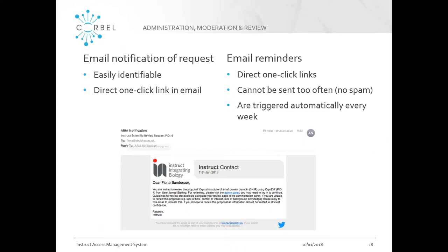Separate from the messaging system, we do email notifications. Those go out to alert users that there are unread messages in the messaging system — either as a digest list or with individual message content, choosable in the profile. There's also an automated email notification service for whenever actions are taken. For example, if facilities need to complete a technical evaluation, an email is automatically generated with a one-click link to the review page. If they don't complete it, reminder emails are sent out every week to stop proposal stalling. All emails are branded with custom themes.